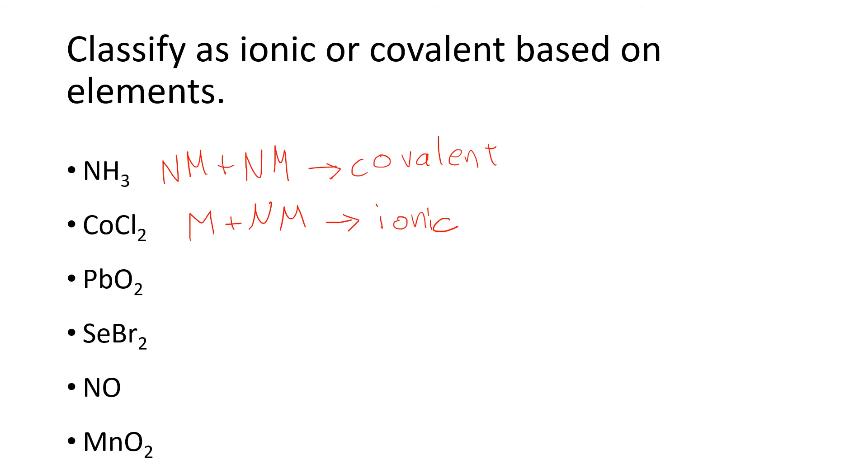Okay, let's check and see how you did. Lead is a metal and oxygen is a non-metal. So this next compound is ionic. Selenium is a non-metal and bromine is a non-metal as well. And so this is going to be covalent. Nitrogen and oxygen are both non-metals. So this compound is covalent. And manganese is a metal where oxygen is a non-metal. And so this will be ionic.